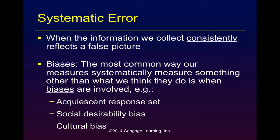Where bias becomes problematic is when we fail to recognize that our way of stating things, approaching things, our cultural norms, etc., are not universal. This does not mean whatever way we communicate is better or worse than another culture — it just means that it is different. Sometimes there are biases built into our research format that have little to do with us or the way we are asking questions. Sometimes it is what we are talking about that is the bias-producing phenomenon.